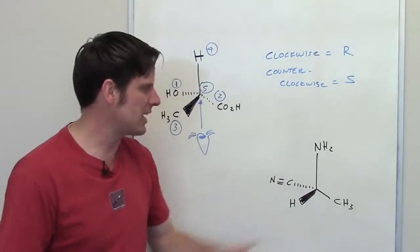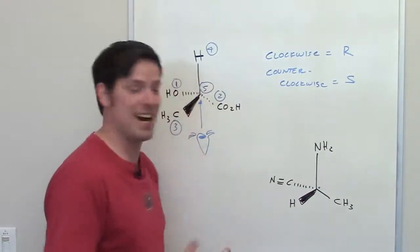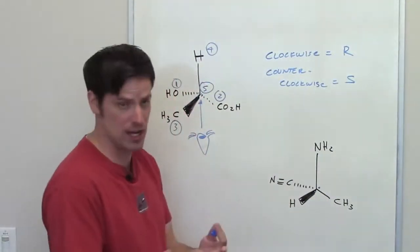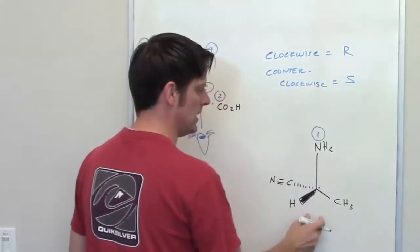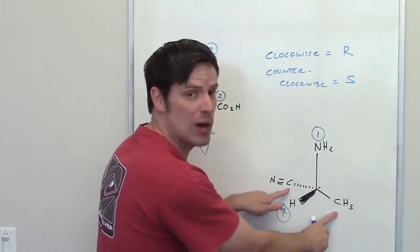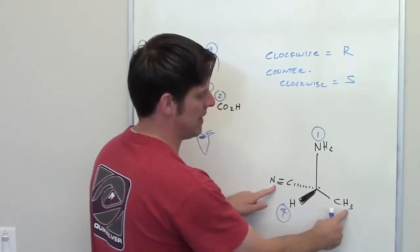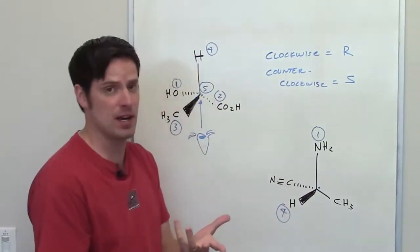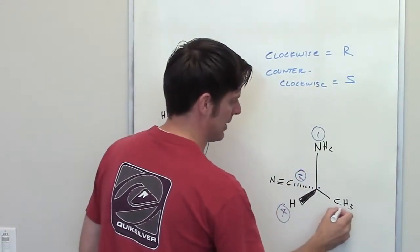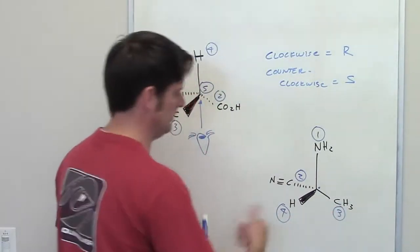Now we'll attack the second molecule in the same manner. I've got my stereocenter right here, also called a chiral center. It's attached to nitrogen, a carbon, a hydrogen, and a carbon. Nitrogen has the highest atomic number, so it's priority group number one. Hydrogen has the lowest, so it's priority group number four. Carbon and carbon tie, so I have to go out one more atom to break the tie. This carbon is triply bound to nitrogen; this carbon is bound to hydrogens. Nitrogen's higher atomic number means this group is priority number two, while the other is priority number three.